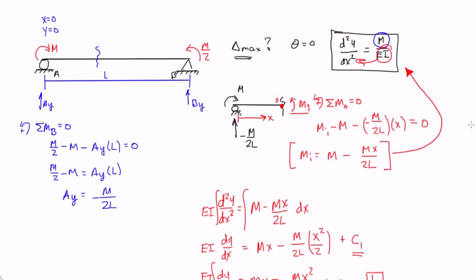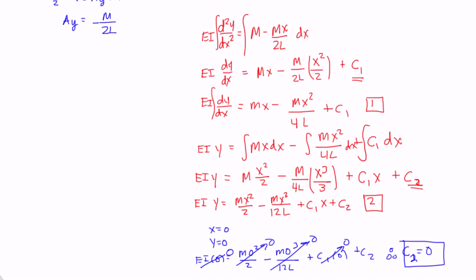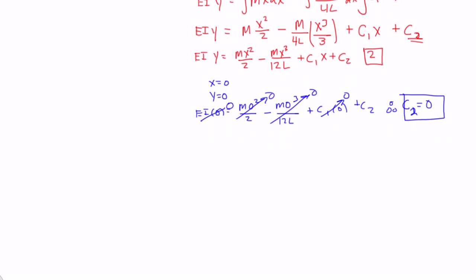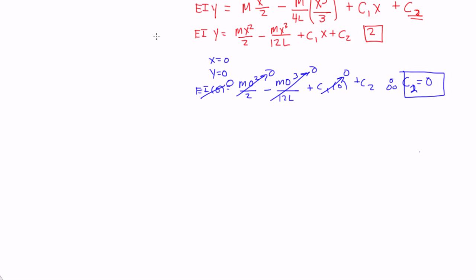If we looked at a diagram here, we can see that at x is equal to L, y is equal to 0. So at point B, the deflection here is 0 because there's a support there. So if we plug that in, we can use equation 2 again.